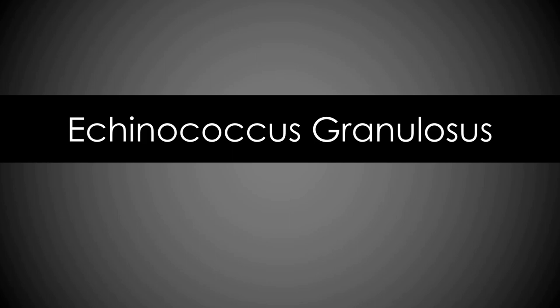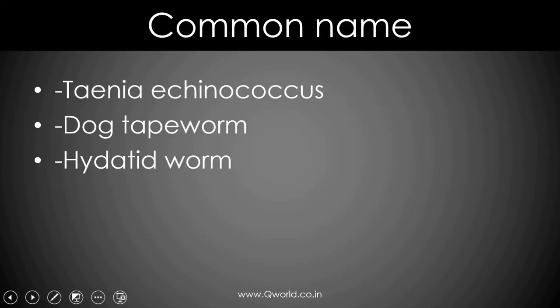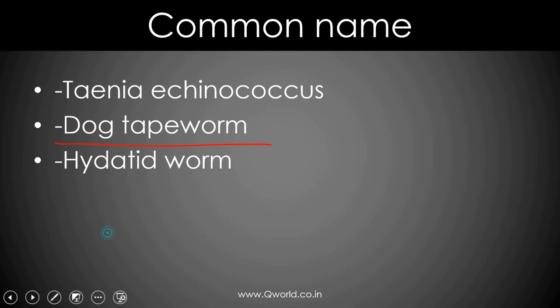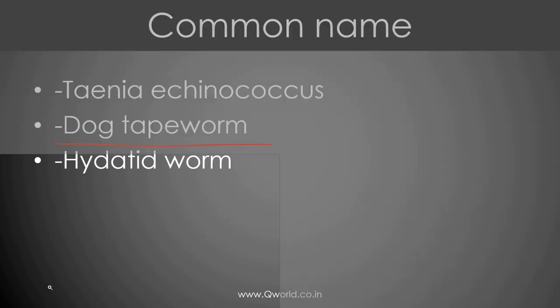Echinococcus granulosus. Common name: Taenia Echinococcus, also known as dog tapeworm. It is also known as hydatid worm.